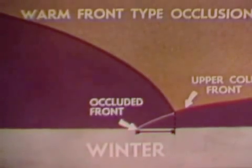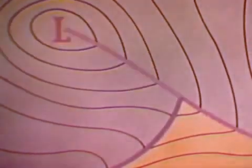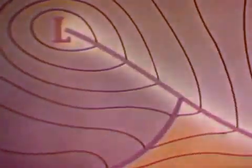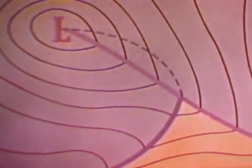This is a warm front type occlusion. Remember, whenever the air under the warm front is the coldest of the air masses involved, a warm front type occlusion occurs. A warm front type occlusion produces an upper cold front that may ride out well in advance of the occlusion at the surface. The surface weather map shows this type occlusion with a solid purple line, an extension of the warm front. The upper cold front is shown with a broken blue line, usually well in advance of the occlusion.